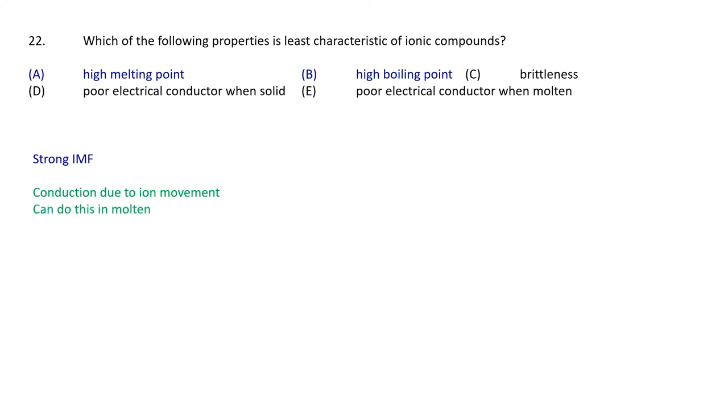They can do this when it's a liquid. But of course, in a solid, those cations and anions are held together so tightly in that lattice, they can't move. So that means that ionic compounds are really poor conductors when solid, but actually pretty good conductors when molten.